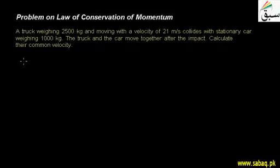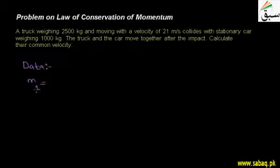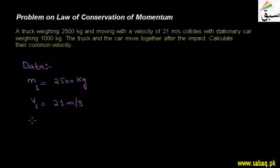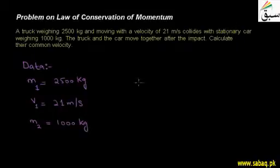Now if we see, students, we have two things given in the data. We will collect the information: we have one truck with a mass M1 = 2500 kg, moving with a velocity V1 = 21 meters per second. Then we have a stationary car — its mass M2 = 1000 kg, and since it is stationary, V2 = 0.